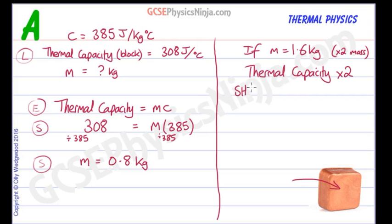So I'll put SHC, the specific heat capacity, or C, stays the same. Why is that?